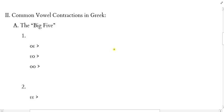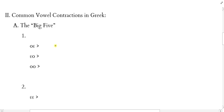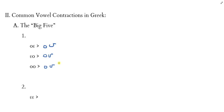Let's start with what vowels come together and then see what the actual contraction is. When omicron meets epsilon, they have a contraction. What's great is it's going to be the same result — these are going to be triplets — the same as when epsilon and omicron meet, and when omicron and omicron meet. So anytime any of these three combinations meet, they all become the same thing: they become the diphthong *ou*. Three different combinations produce the same contraction.